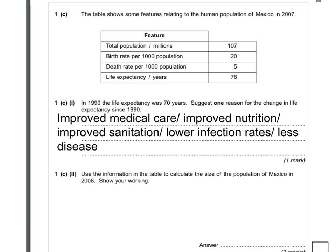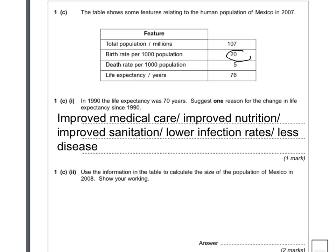We've got 20 births per 1,000 people and 5 deaths, so that is a net increase of 15 people per 1,000 of the population. If you divide that by 1,000, that gets us our answer: 0.015. So that's per — we've now decimalised that.